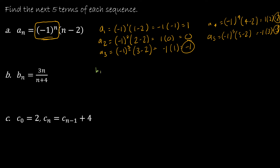Continuing on, b sub 1 would be 3 times 1, which is 3, over 1 plus 4, which is 5. B sub 2 is 3 times 2, which is 6, over 2 plus 4, which is 6. B sub 3 is 3 times 3, which is 9, over 3 plus 4, which is 7.